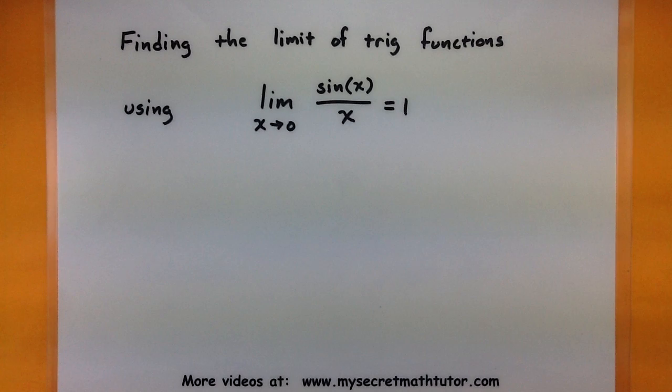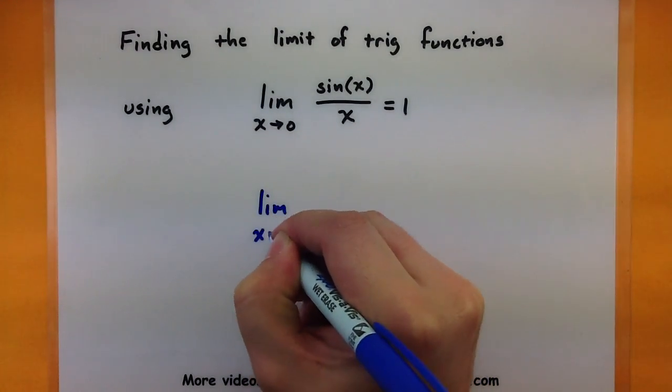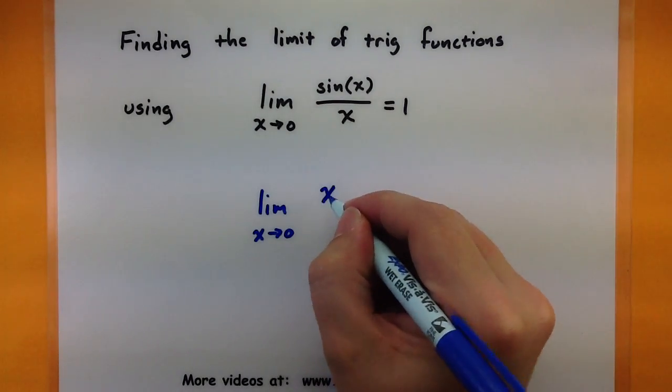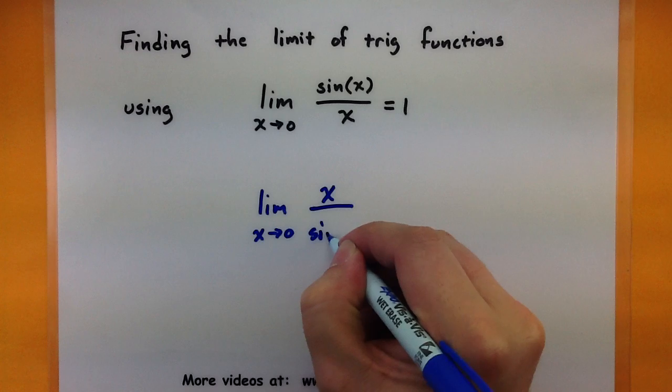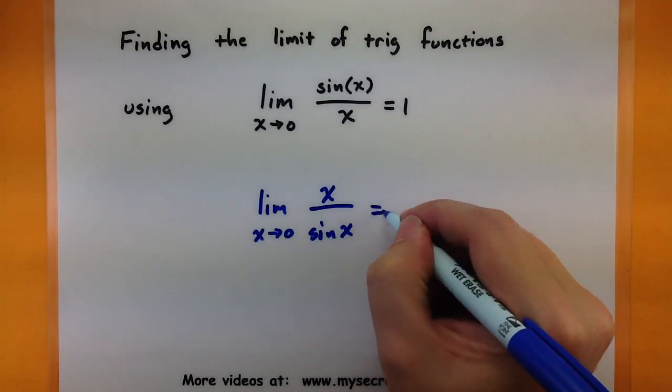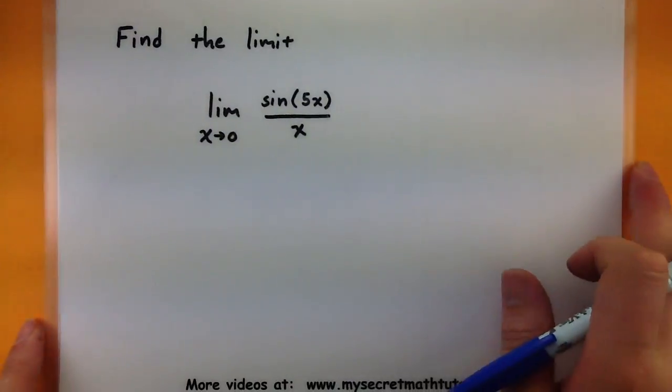Now sometimes we'll have to do a lot of manipulating to work that in, but you'll see that it does show up quite a bit. Another thing I want to note before we jump into examples is sometimes you'll see this flipped over, with the x on the top and the sine of x on the bottom. Even in this instance the limit is still equal to 1, so watch for both of those pieces to show up. Let's go ahead and take a look at these examples and see how we can put this to use.